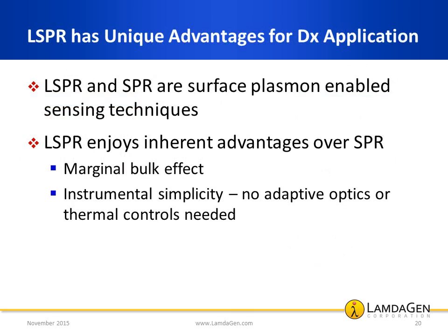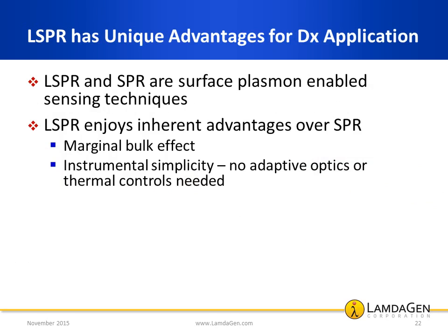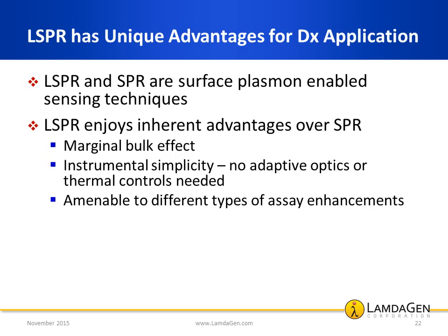Second, LSPR can be performed with simple instrumentation — there is no need for adaptive optics, and in fact room light and the human eye are sufficient to observe some reactions. Further, the LSPR signal is largely temperature-independent, so there is no need for thermal controls. Third, LSPR is unique in that amplification steps performed in serum, plasma, urine, or saliva generate precise signals that can be measured for precise target quantitation. Thus, ELISA, for example, can be performed on LSPR with exquisite sensitivity and assay precision.